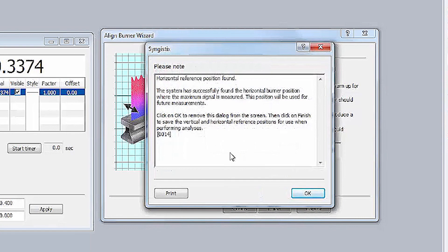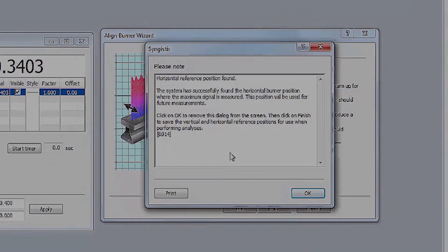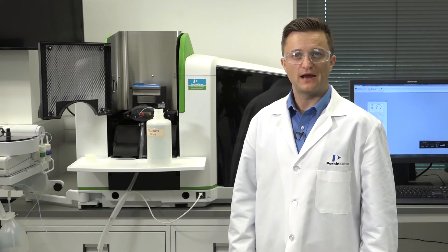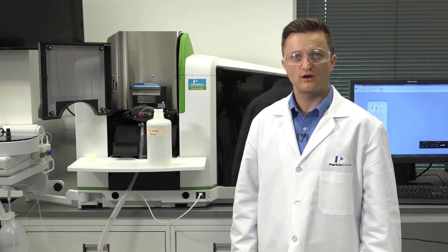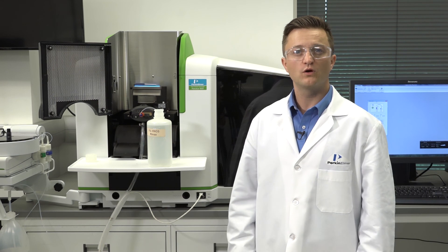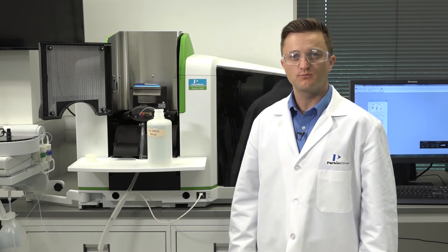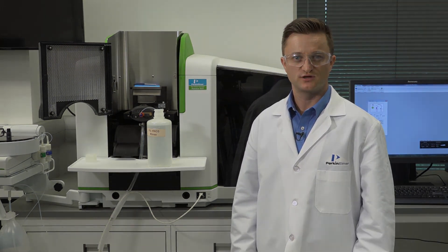Now your burner is aligned. After alignment, run a sensitivity check solution which produces approximately 0.2 absorbance units. Your instrument manual and these how-to videos are great resources to help get you familiar with your AA instrument. For more in-depth information on how to properly maintain and use your Pinnacle AA system, sign up for one of our training courses or contact your PerkinElmer representative for additional options.